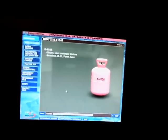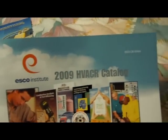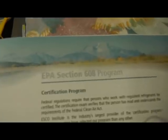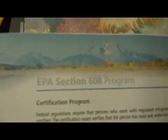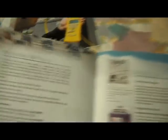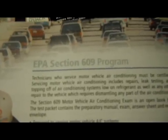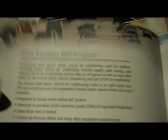Now let's take a better look at the ESCO Institute 2009 HVACR catalog. It tells you all the other certifications you can get through them. One of the probably most popular is the EPA Section 608 program. And there's the EPA Section 609 program — that's for people who work on automotive air conditioning.